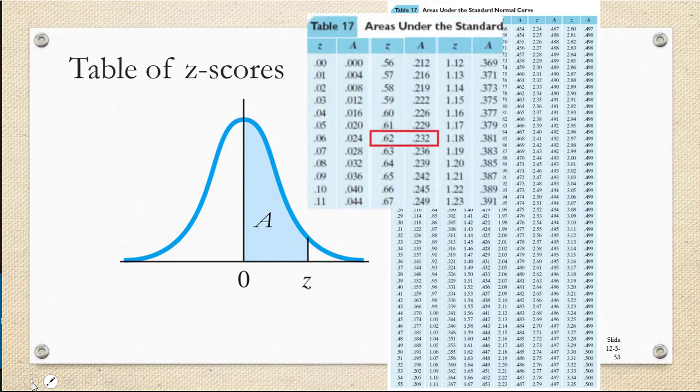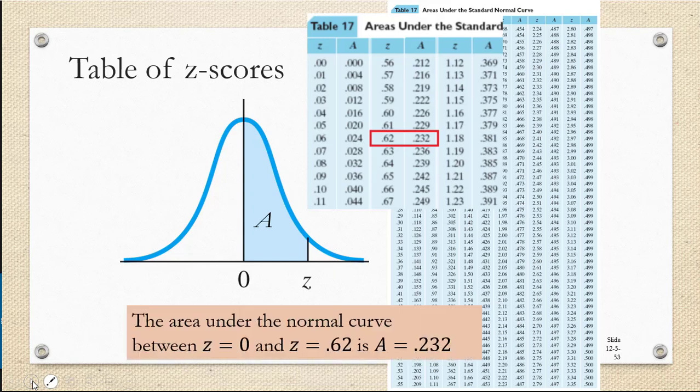So suppose that we were given a z-score of 0.62. If we look that up on the table, then in the column to the right of that z-score, we'll see a corresponding area of 0.232. So this means that the area under the normal curve between z equals 0 and z equals 0.62 is 0.232.